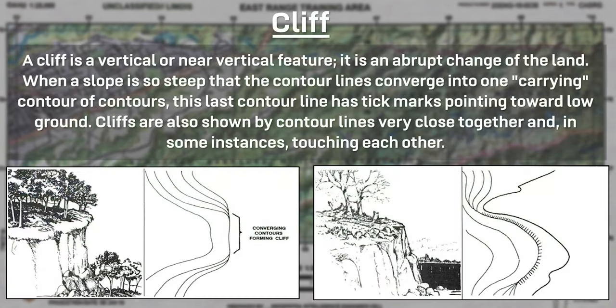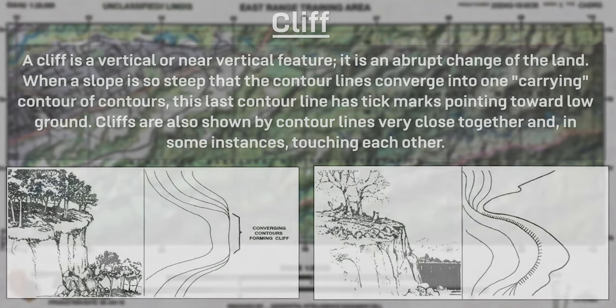A cliff is a vertical or near-vertical feature that is an abrupt change of the land. When a slope is so steep that the contour lines converge into one, this last contour line has tick marks pointing toward the low ground. Cliffs can also be shown by contour lines very close together and in some instances touching each other.